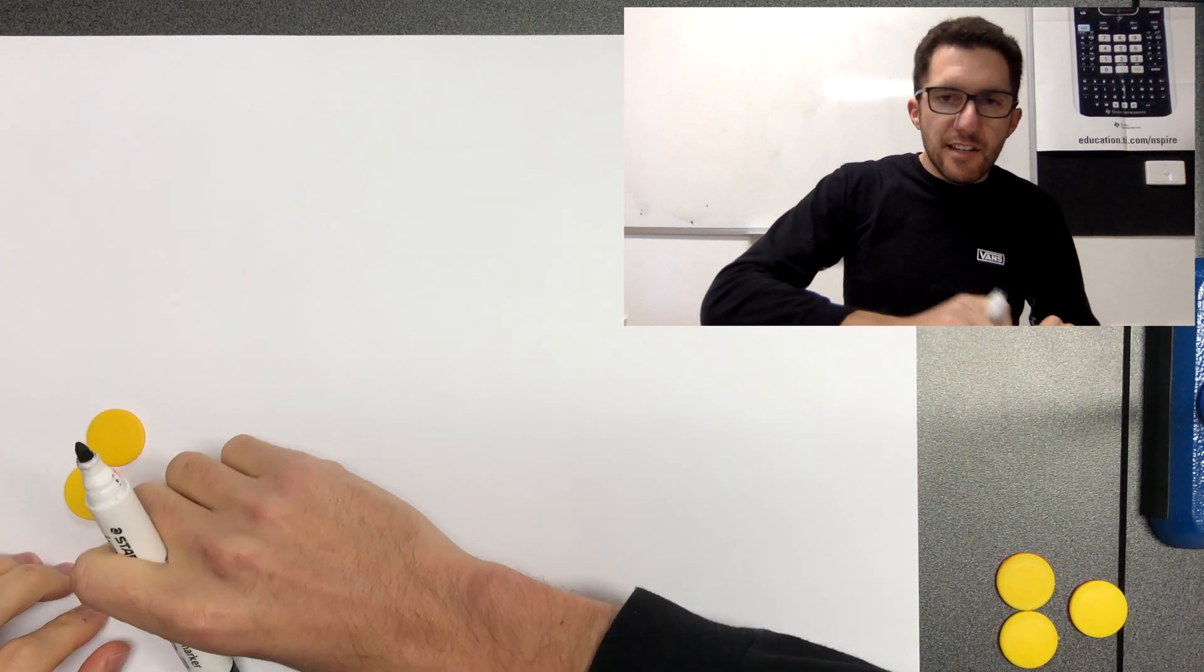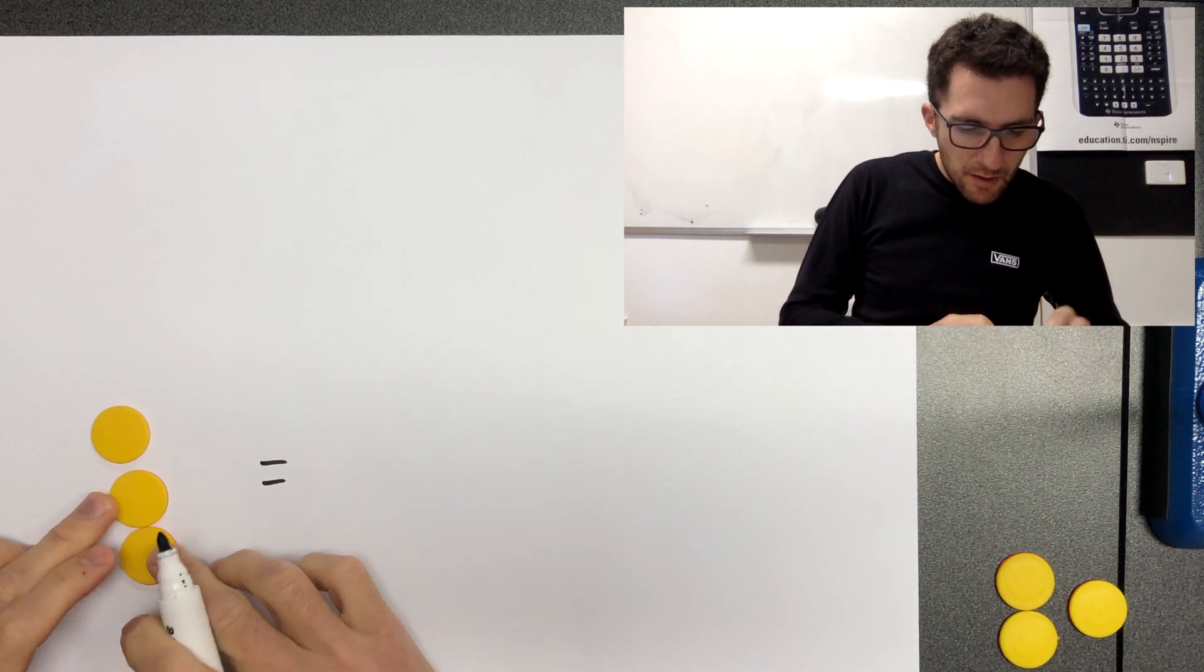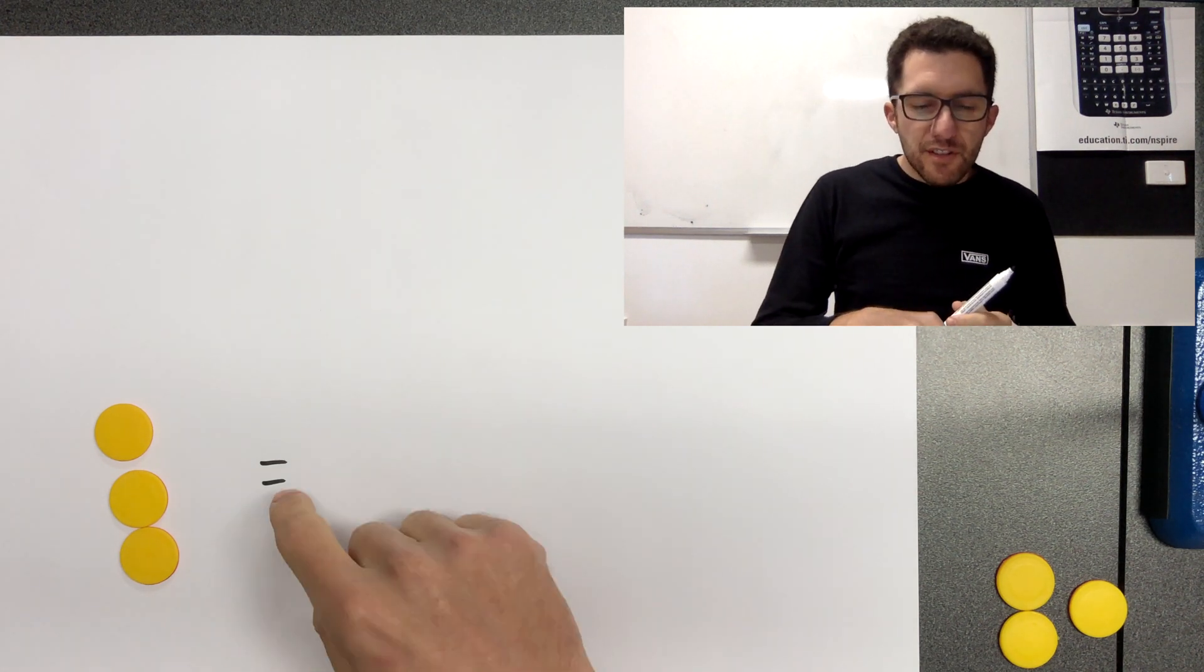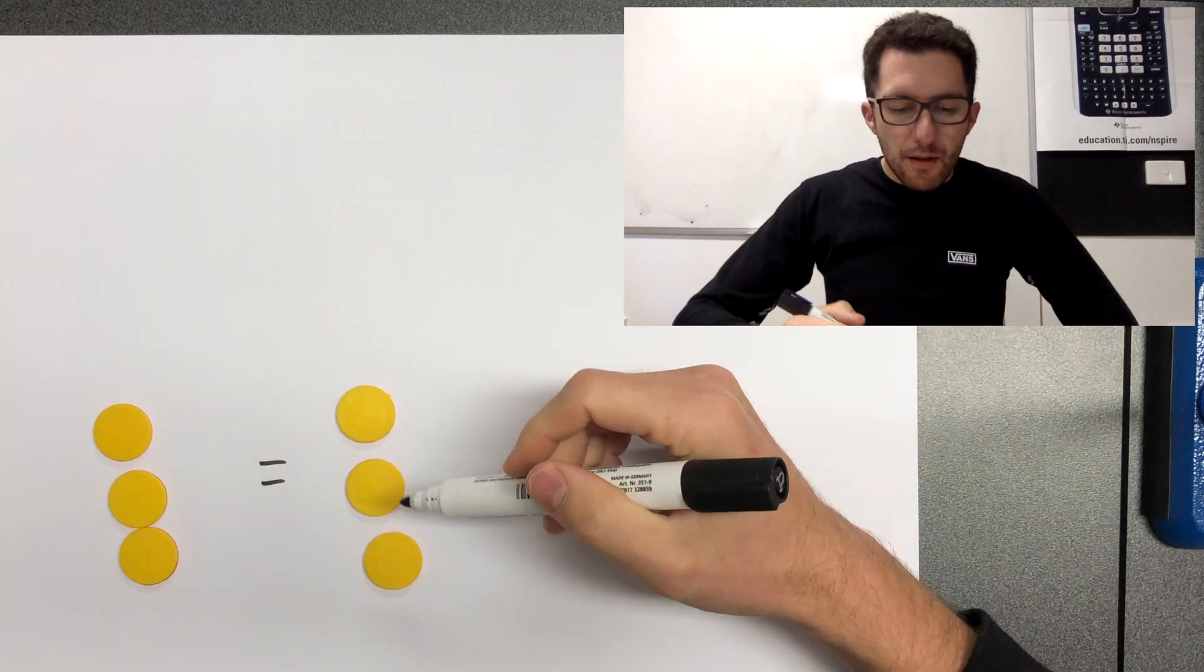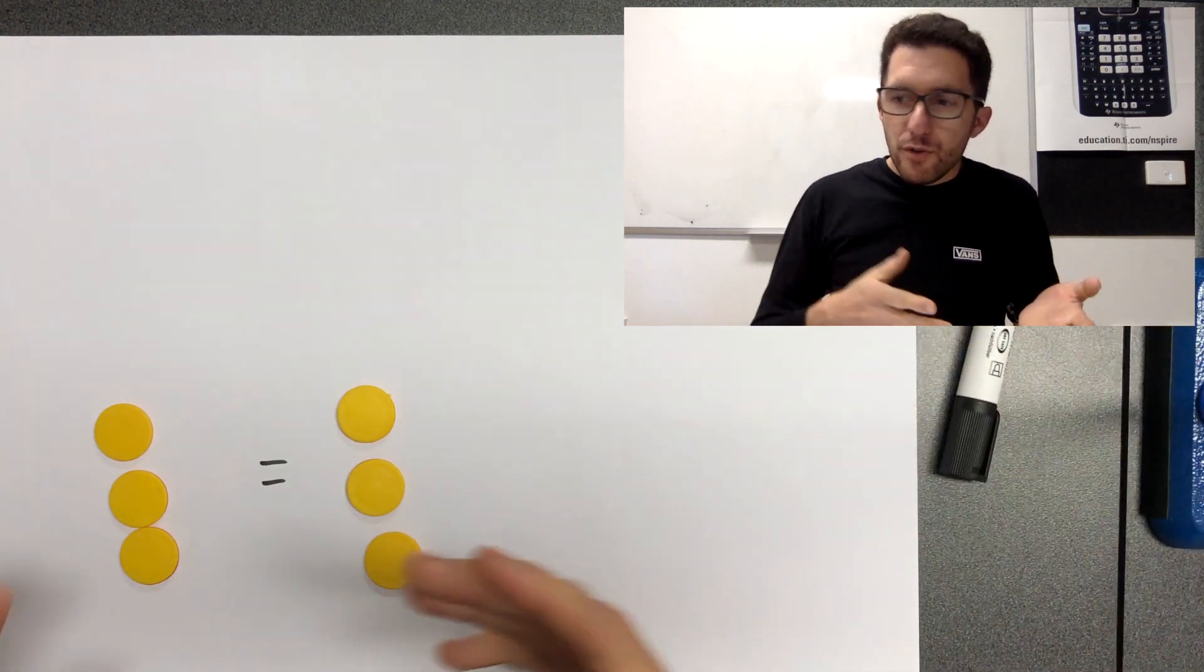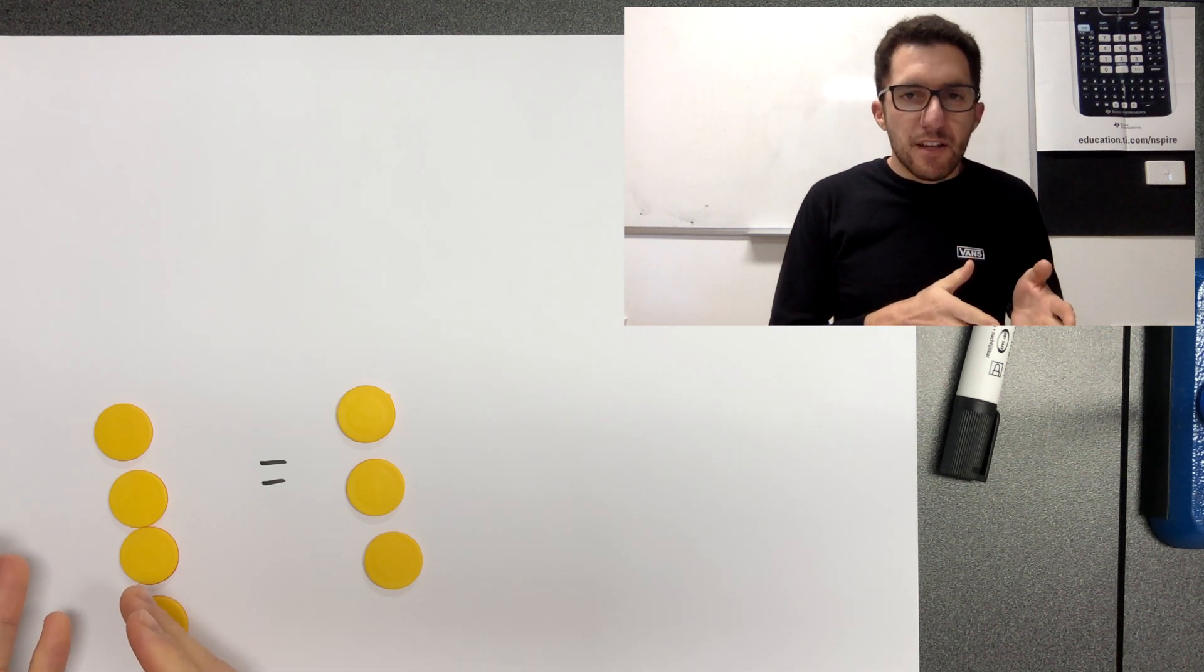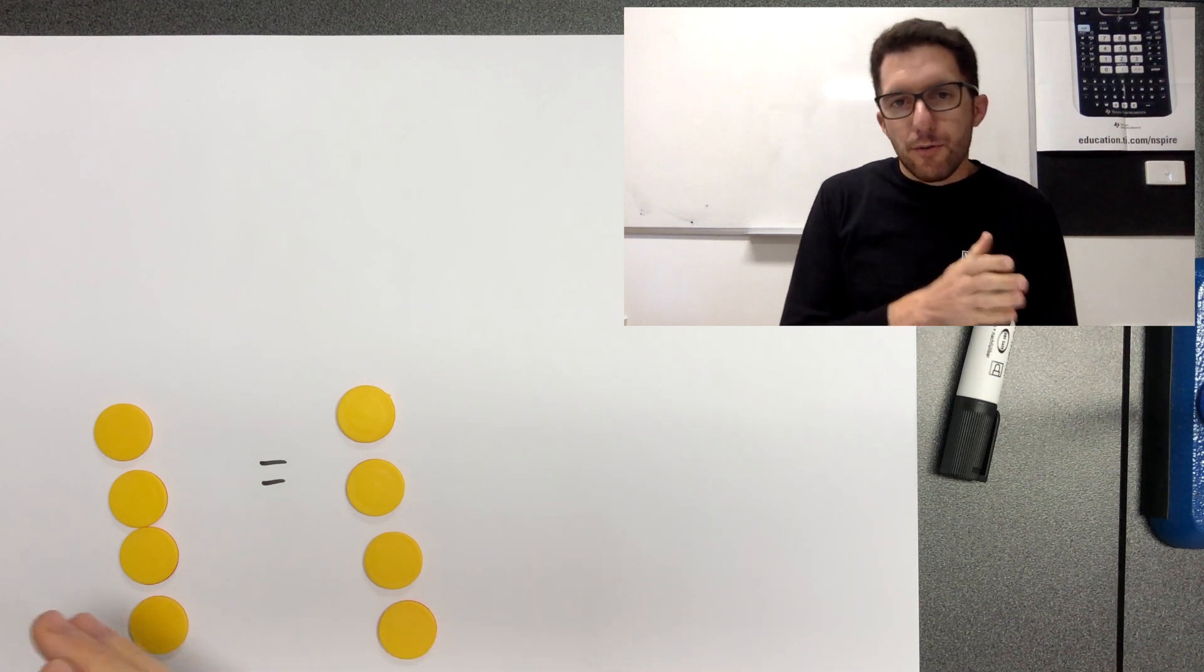So let's add in an equal sign. So over this side we've got number three. For this equal sign to be true, we must have three on the other side as well. Now, what I could do is if I add one here to make this four, then I also need to add one to the other side to keep it true. So four equals four.